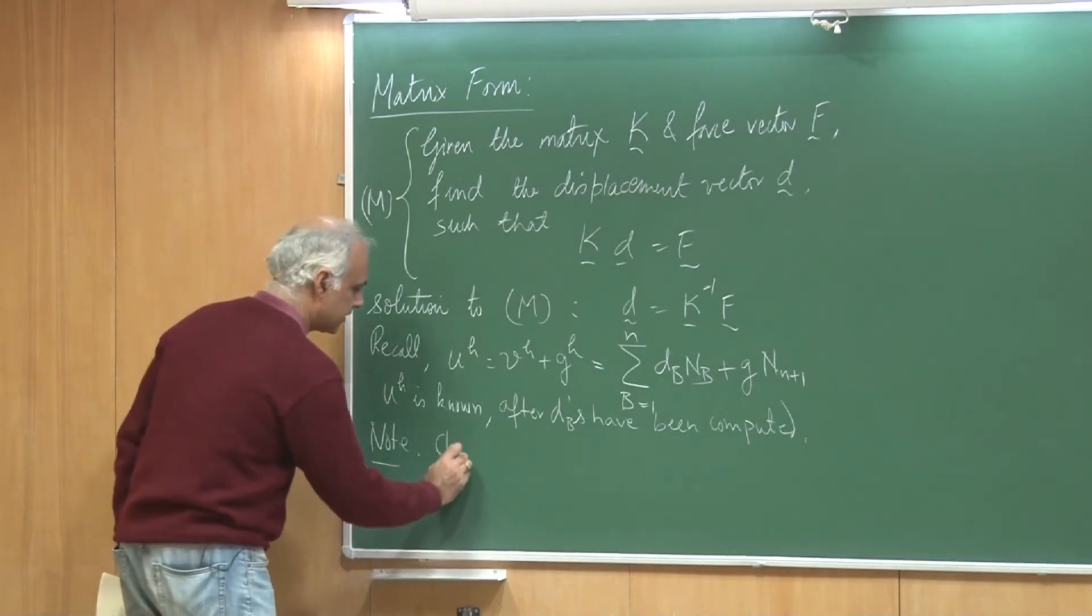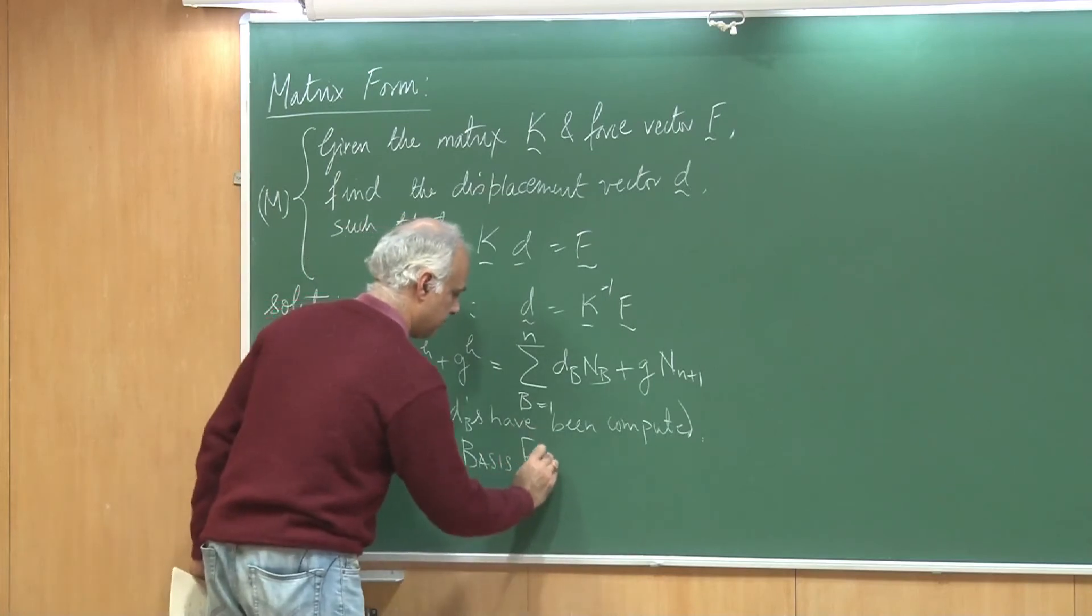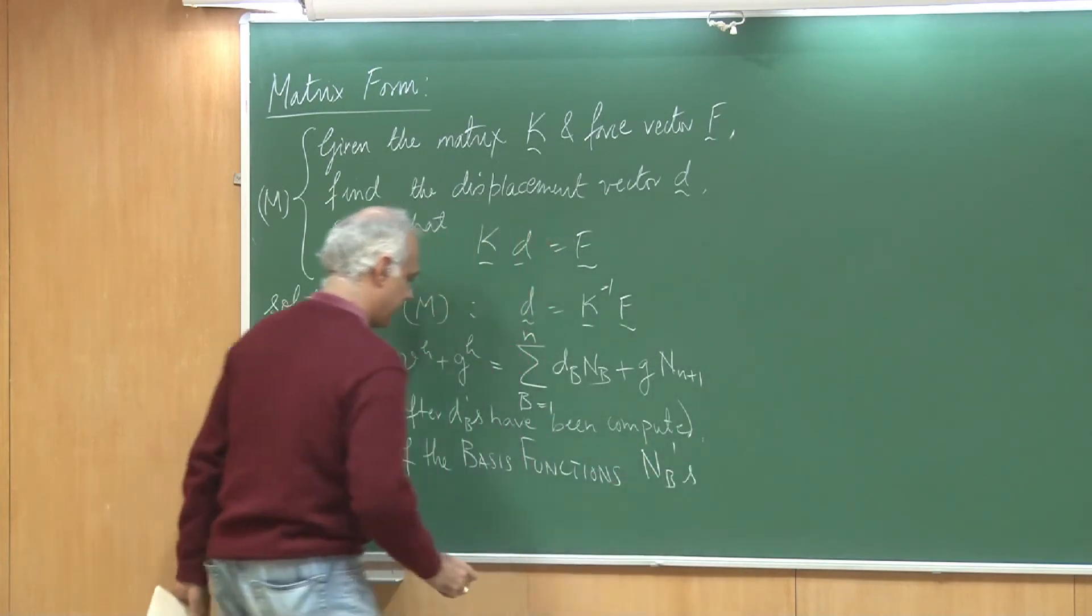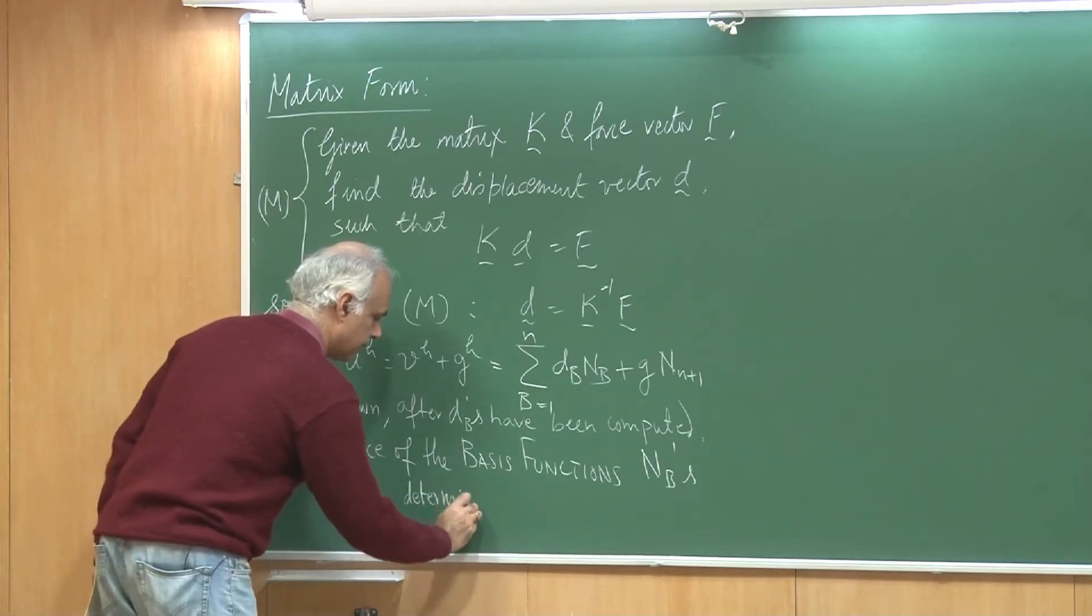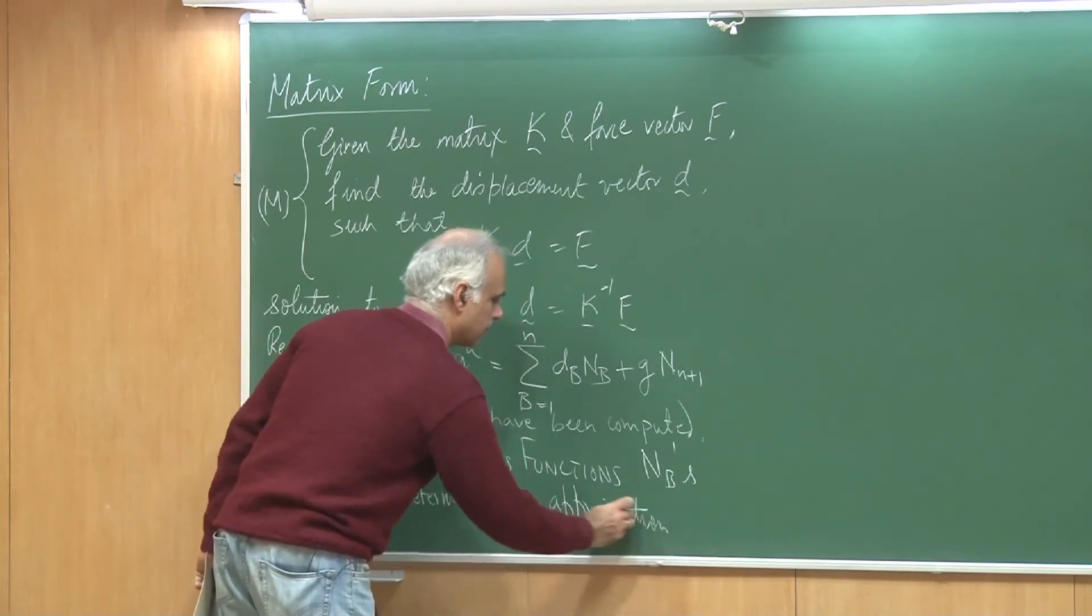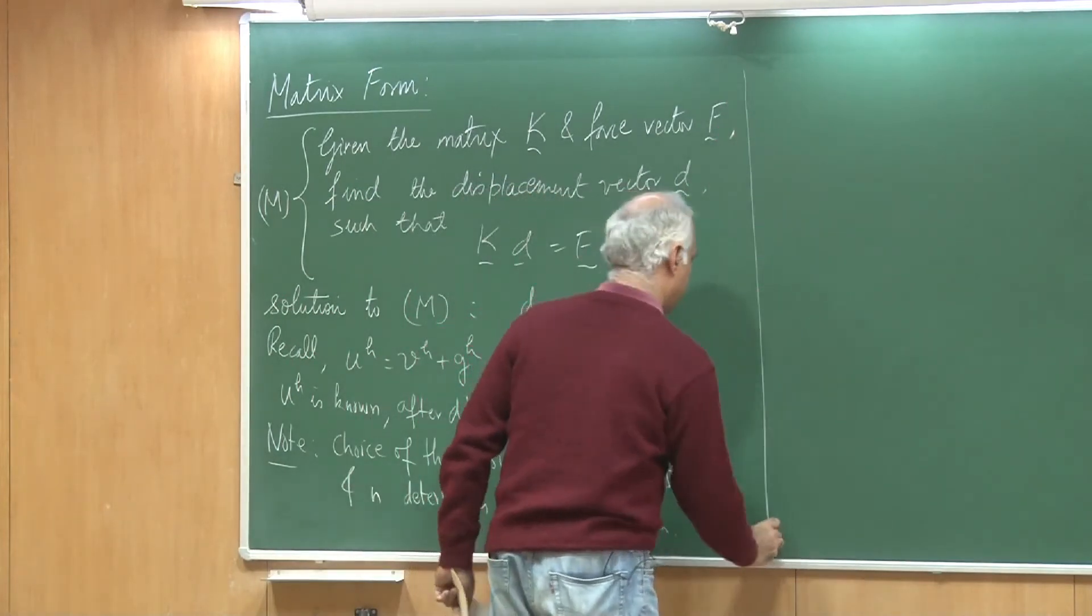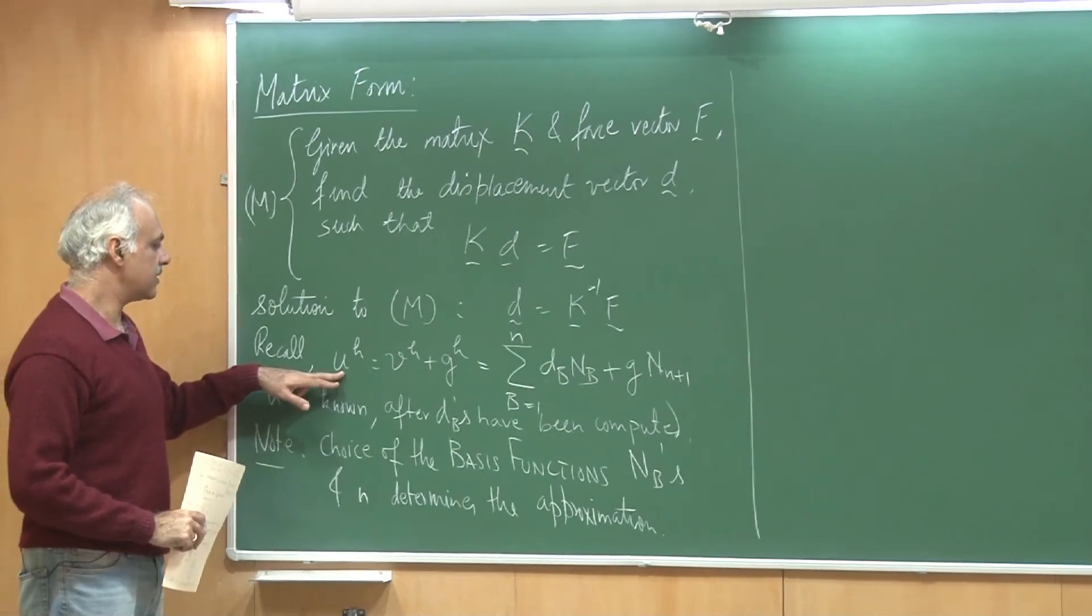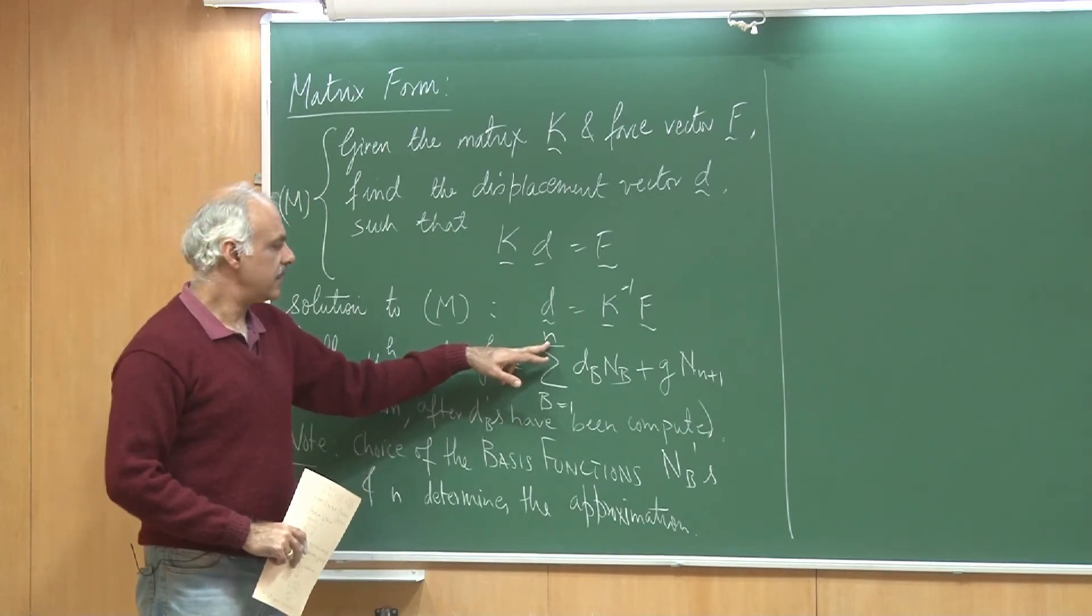Notice that the choice of the basis functions, that means n_b's and the dimension n, determines the approximation. The idea is very simple. You are trying to set up an approximate method and you want to get u_h. You set out by choosing a set of basis functions and n of them.